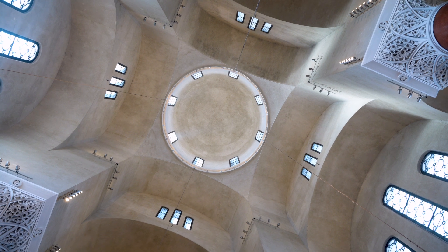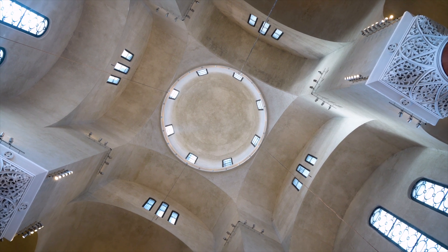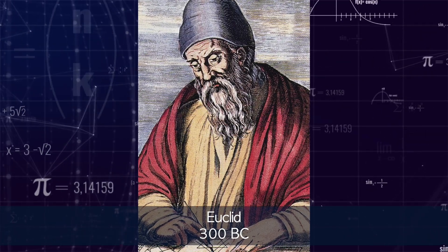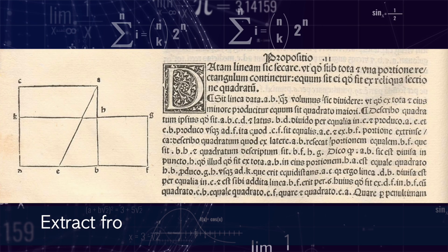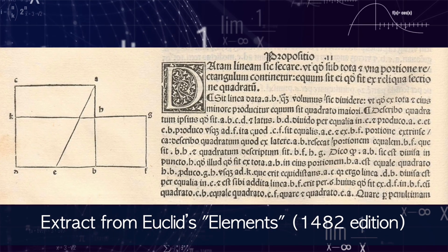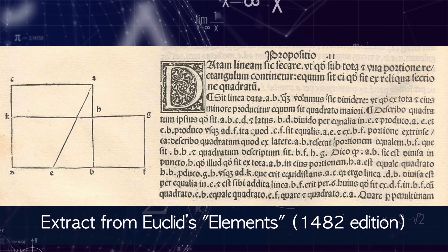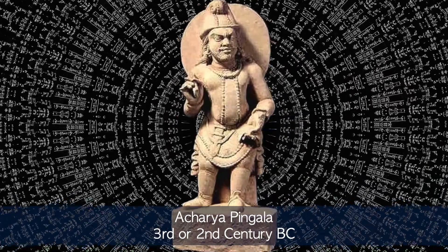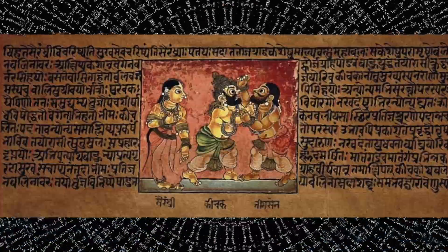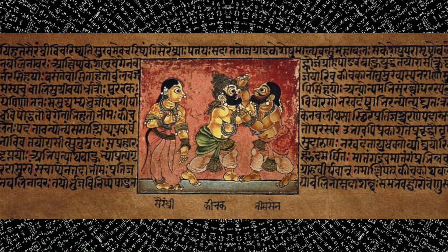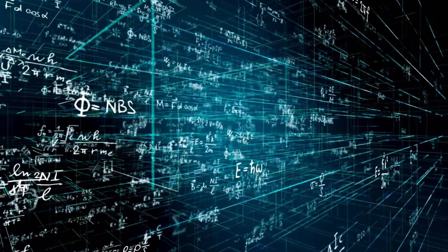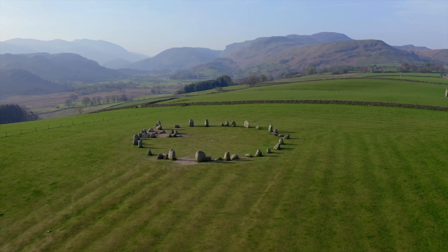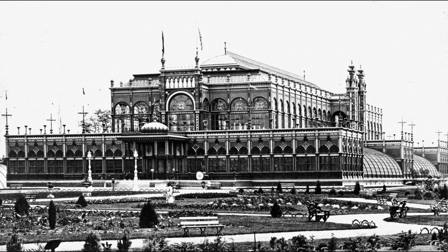The golden ratio was first discovered by the ancient Greek mathematician Euclid, who called it the division, appearing around 300 BC. But this ratio was also known to an Indian mathematician known as Pingala in his Sanskrit poetry from around 200 BC. This has been a mathematical equation used throughout all ancient history and old world architecture.